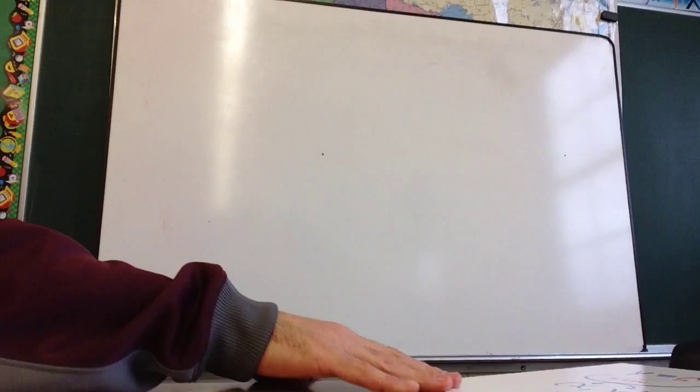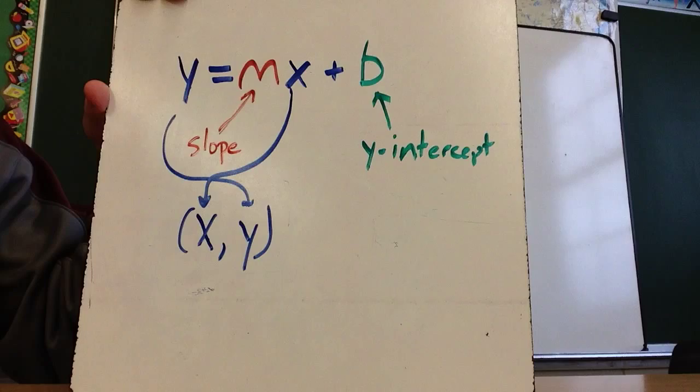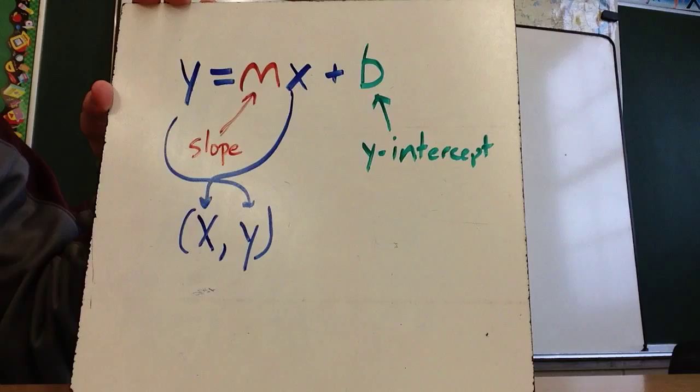So the first thing we're going to start with is the formula for slope-intercept. And so this is one that I'm hoping you heard last year, which is y equals mx plus b.